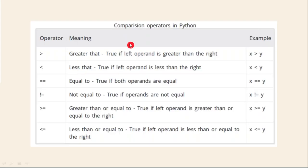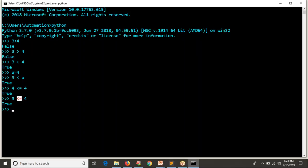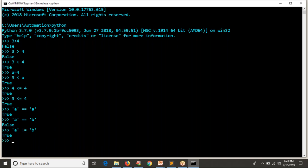Using comparison operators with number systems is very easy because we are familiar with numbers from mathematics. By looking at two numbers you can directly tell the relationship — equal, not equal, greater than, less than, and so on. But strings are also important when discussing comparison operators. For example, checking if 'a' equals 'a' gives true, 'a' equals 'b' gives false, and 'a' not equals 'b' gives true.